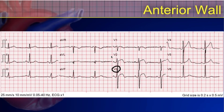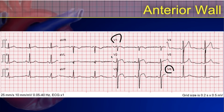Here's an anterior wall infarct. The anterior wall corresponds to V3 and V4, and that's where the changes are seen. There are no true reciprocal leads for the anterior wall, so no reciprocal changes appear on this 12-lead. However, there are changes extending into V2, and it's worth noting that any sequential precordial leads — V1 through V6 — are also contiguous to each other. V2 and V3 being contiguous means this would be classified as an anterior-septal infarct.